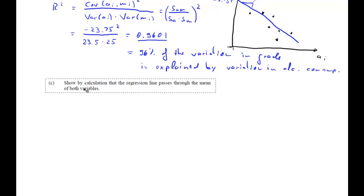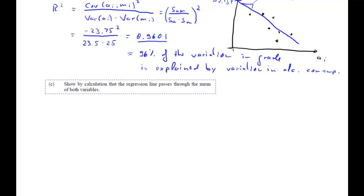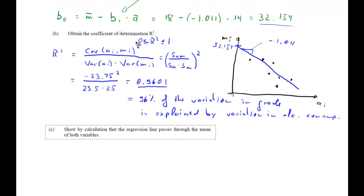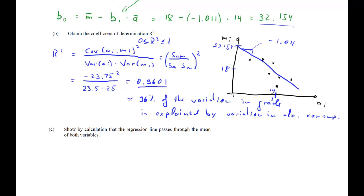Show by calculation that the regression line passes through the mean of both variables. We know the mean grade was 18 and the mean alcohol consumption was 14. The question is to demonstrate that the point where a equals 14 and m equals 18 actually lies on the regression line.